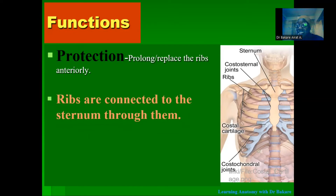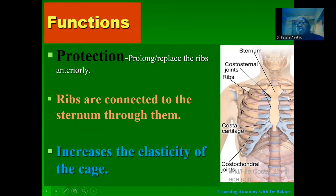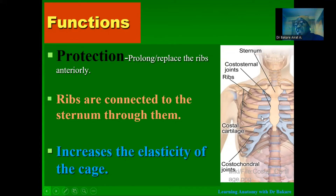Secondly, the ribs are connected to the sternum through the costal cartilages. The costal cartilages are important because they help to connect the ribs to the sternum. They also help to increase the elasticity of the thoracic cage. During the respiratory process, either during inspiration or expiration, there is an increase or decrease in the thoracic cavity, enhanced through this cartilaginous structure, creating an anterior expansion of the thoracic cage to control respiratory processes.